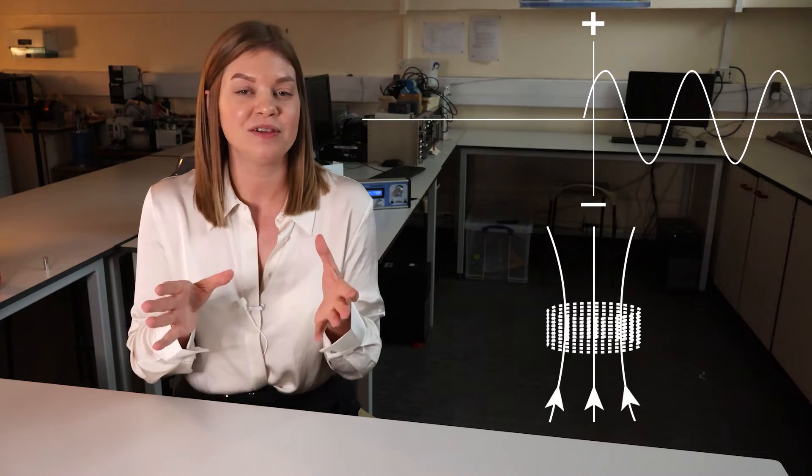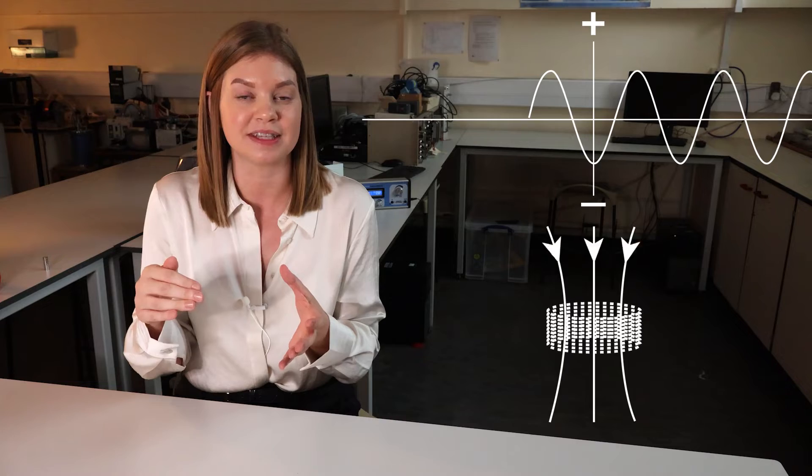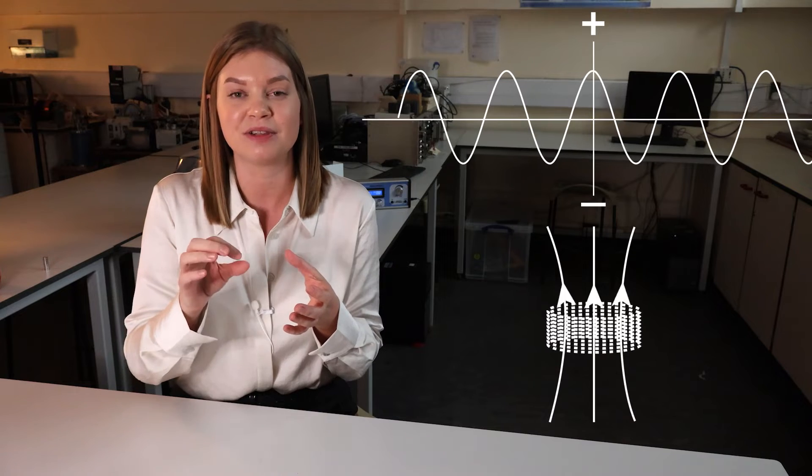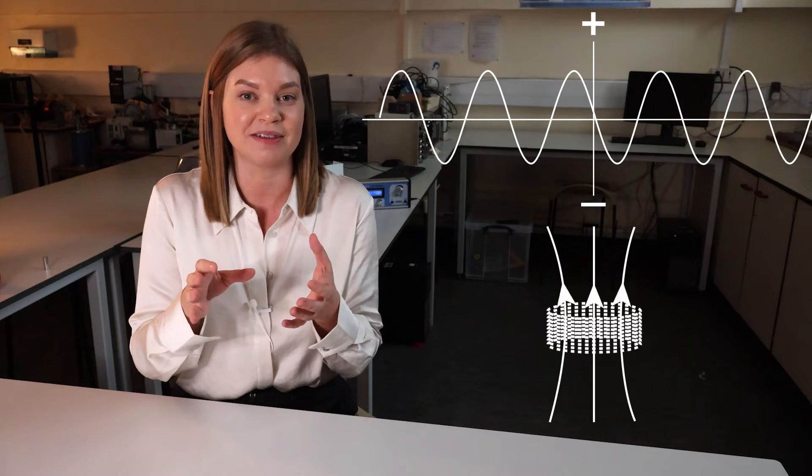If we pass an alternating current through the coil, in the positive phase of the cycle the current will flow in one direction, and in the negative phase it will flow in the opposite direction. This means we get an oscillating magnetic field which switches as the current changes polarity. If we let this oscillating magnetic field interact with a permanent magnet, the coil physically moves up or down depending on whether it's attracted or repelled.